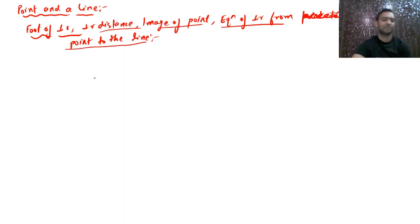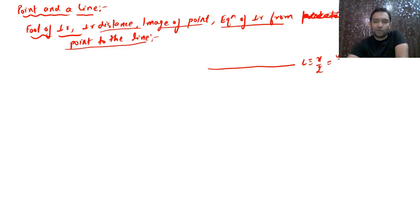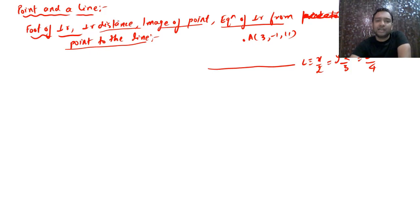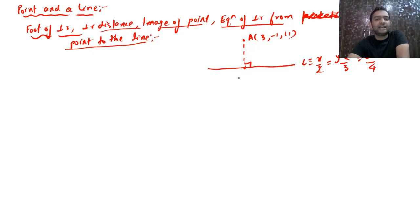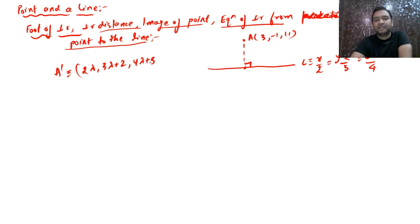The example: the line is x/2 = (y−2)/3 = (z−3)/4 and the point is A = (3, −1, 11). To find the foot of perpendicular A', assume A' is a general point on the line: (2λ, 3λ+2, 4λ+3). Then the vector AA' = (2λ−3)î + (3λ+3)ĵ + (4λ−8)k̂.